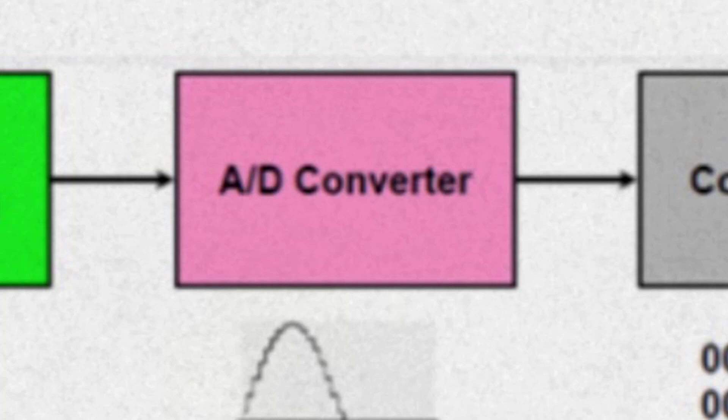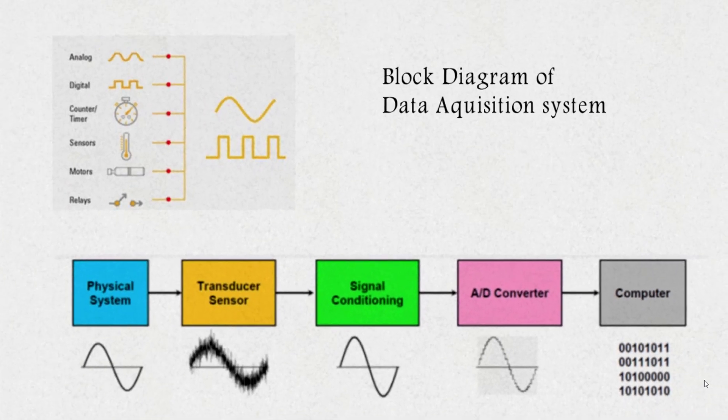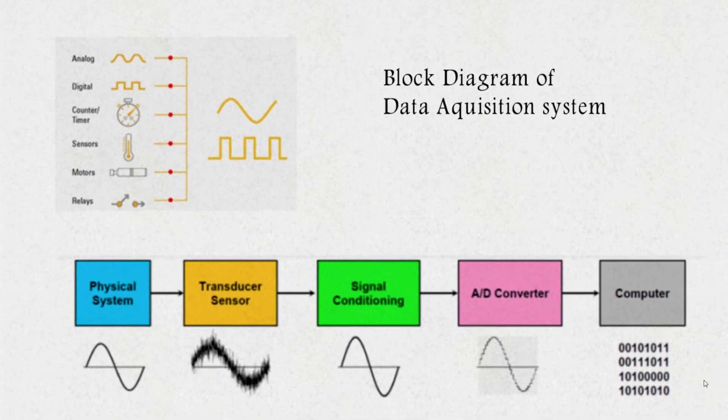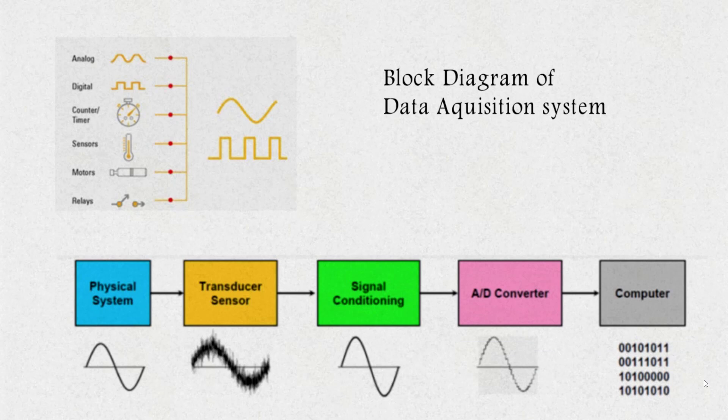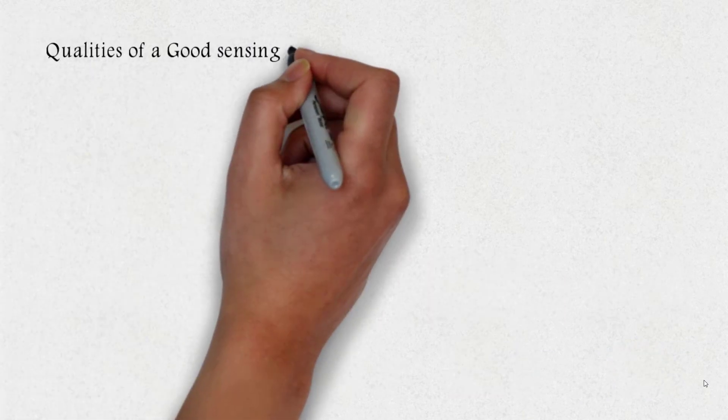For now, we'll concentrate on transducers and sensors. Signal conditioning and analog to digital converters are a concern for another day. Before we dive deep into the types of transducers, let's see the qualities of good sensing units.